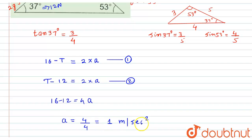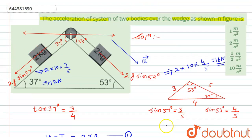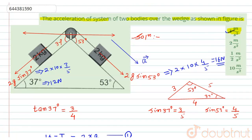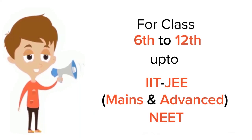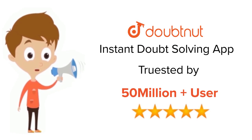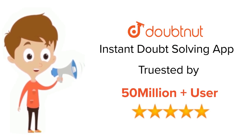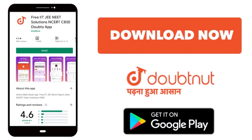So the required acceleration for the system is 1 meter per second squared. Option 1 is the correct answer. I hope you liked this solution. Thank you. For class 6 to 12, IIT JEE, and NEET level, trusted by more than 5 crore students — download the Doubtnut app today.